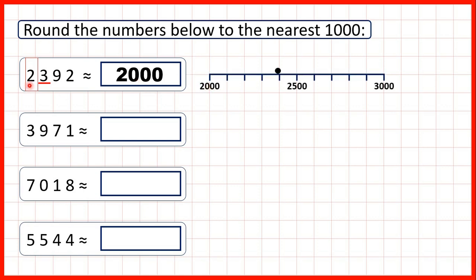We can see the number 2,392 on a number line, and we can see that it's closer to 2,000 than to 3,000. I'll come back to the number lines at the end of the video. For now, let's focus on the method.